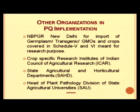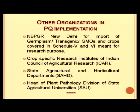Other than DPPQS, certain other organizations play important roles in plant quarantine implementation in India. The National Bureau of Plant Genetic Resources (NBPGR), New Delhi handles import of germplasm, transgenics, and GMOs covered in schedules 5 and 6 for research purposes. Crop-specific research institutes of the Indian Council of Agricultural Research (ICAR) assist the plant quarantine department, and state agriculture universities and horticulture departments also play very important roles in plant quarantine implementation.